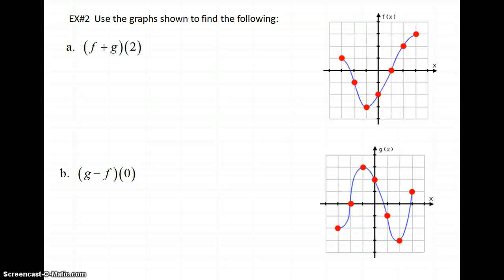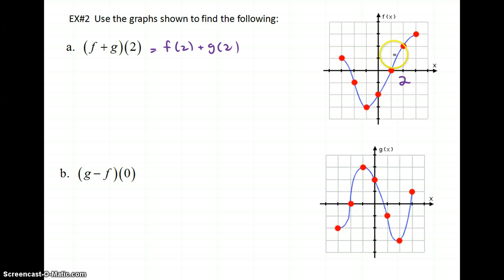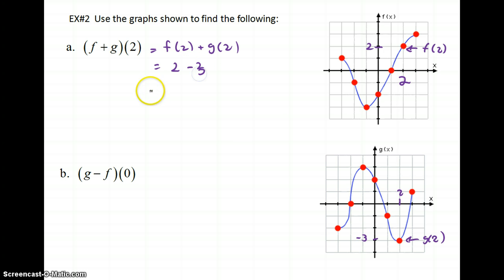For this problem, we're given a graph and we want to find f plus g of 2. This equals f of 2 plus g of 2. So f of 2: here is my f function at x equals 2, and f of 2 equals 2. For g of 2, here's 2, and g of 2 equals negative 3. So it's 2 plus negative 3, which is negative 1.